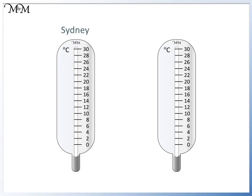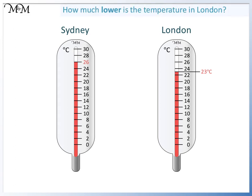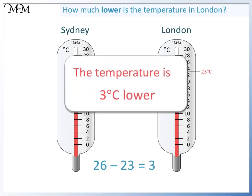The temperature in Sydney is 26 degrees C. The thermometer shows that the temperature in London is halfway between 22 and 24 degrees C, which means the temperature in London is 23 degrees C. How much lower is the temperature in London? To find the difference, we could count on from 23 or subtract 23 from 26. 26 take away 23 equals 3, so the temperature in London is 3 degrees C lower than in Sydney.